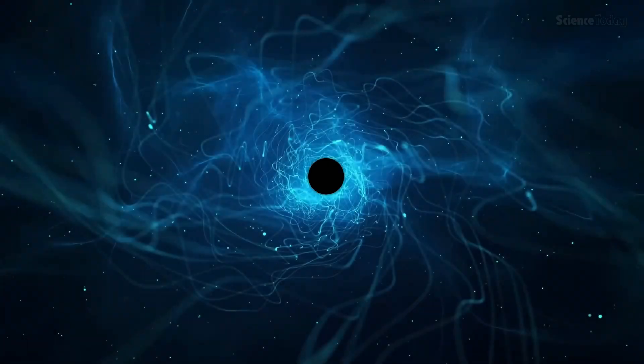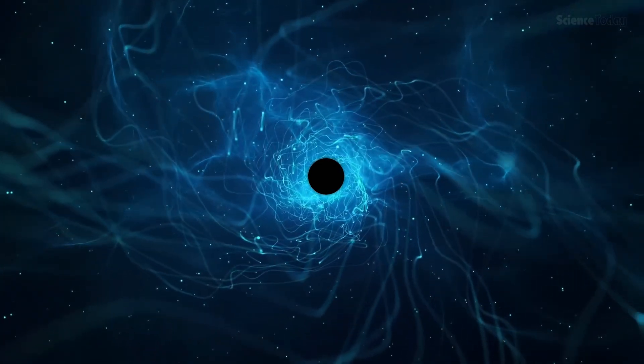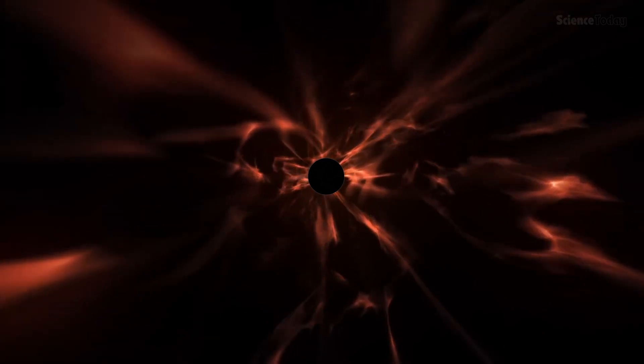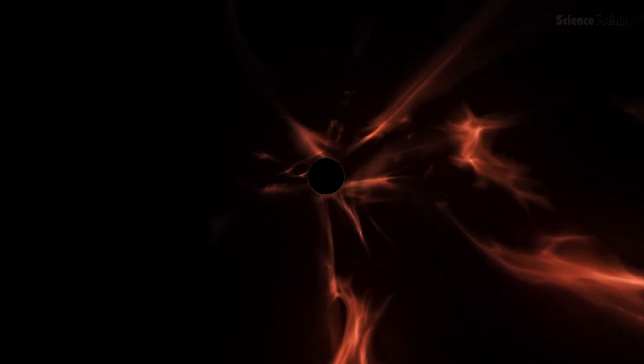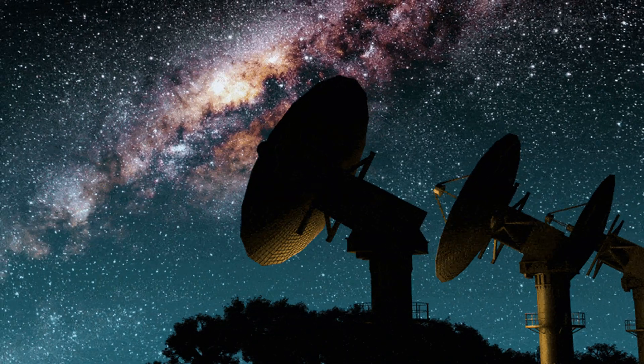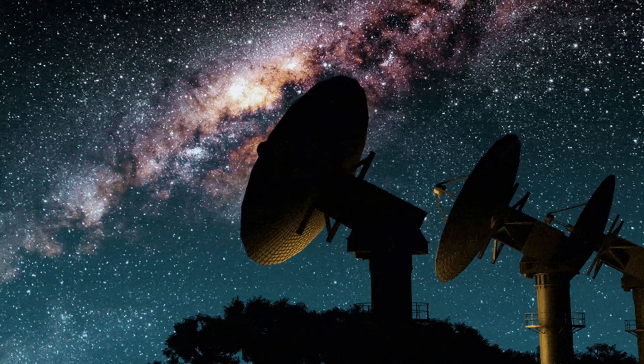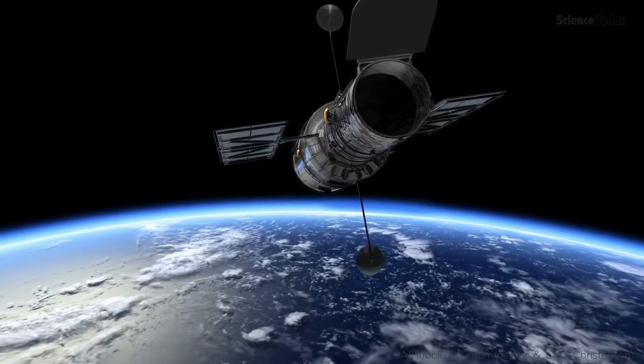One prominent idea is that information might be encoded in Hawking radiation, the faint thermal glow emitted by black holes as they slowly evaporate over billions of years. Yet testing this hypothesis is nearly impossible with our current technology, as observing Hawking radiation directly remains out of reach.